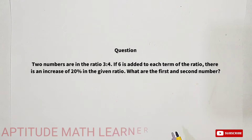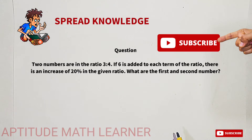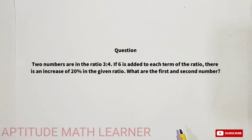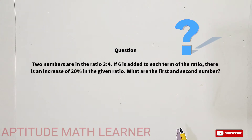Welcome to our YouTube channel, Aptitude Math Learner. Today we have a very interesting question: two numbers are in the ratio 3 is to 4. If 6 is added to each term of the ratio, there is an increase of 20 percent in the given ratio. We have to find the first and second numbers respectively.